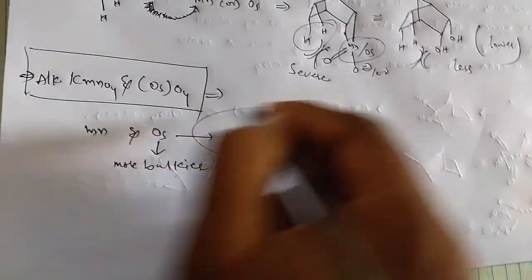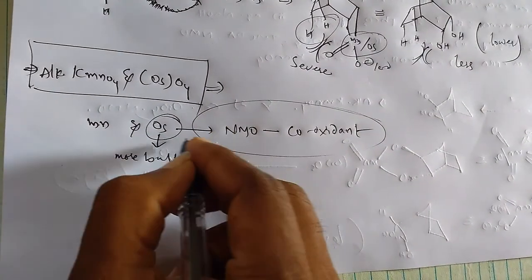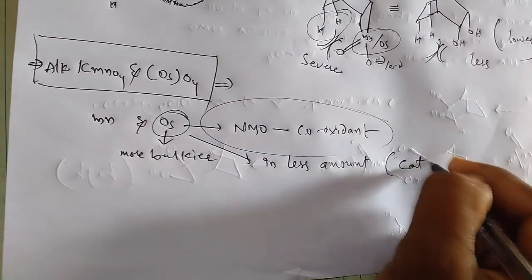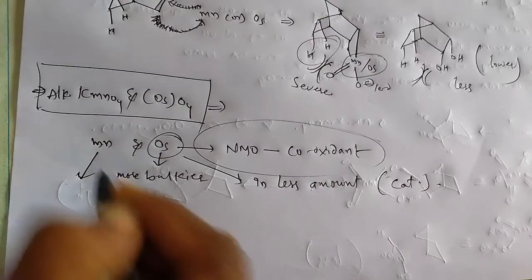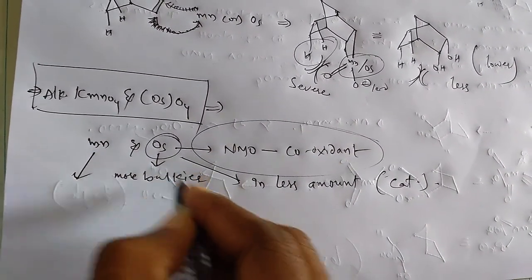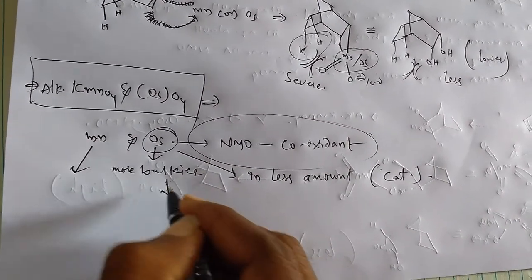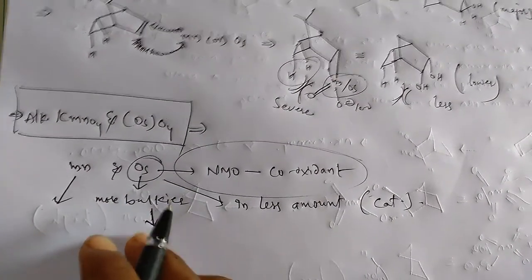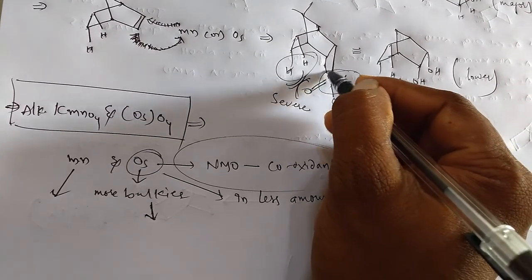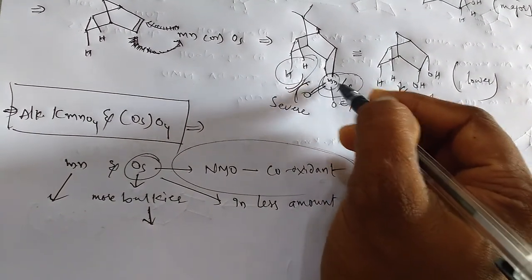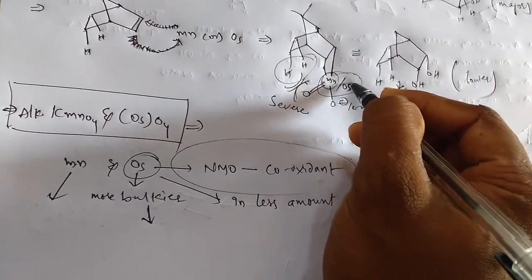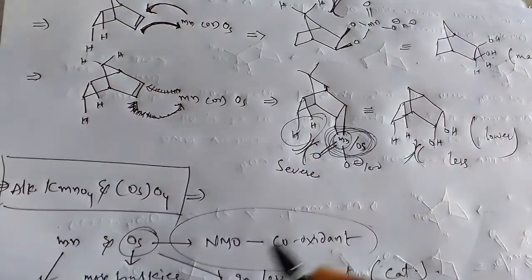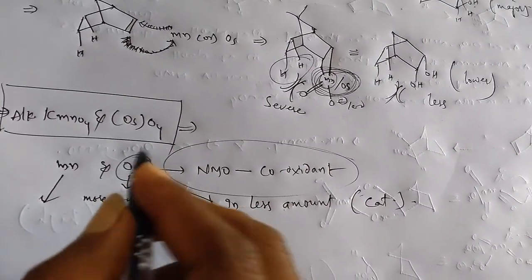This co-oxidant increases catalytic activity of osmium, and that's why osmium is required in less amount, so that is simply catalytic amount. When we compare with manganese, these all conditions make use of osmium. If you observe, there is a lesser amount of chances for manganese here. When you apply osmium, there is no chance because osmium is biggest, it's bulkier, and it causes more repulsions.